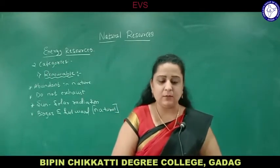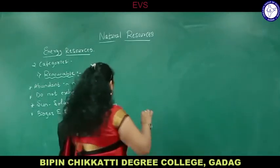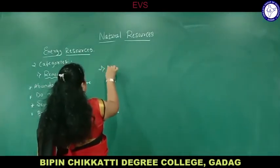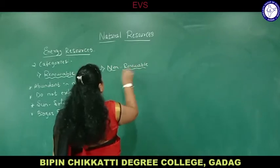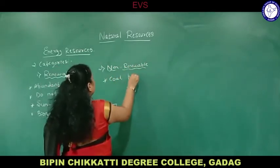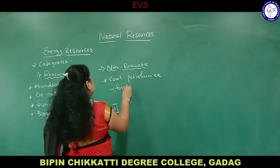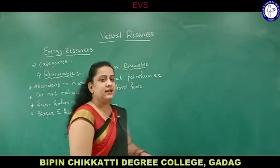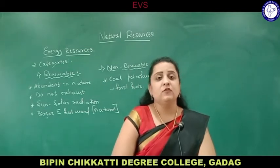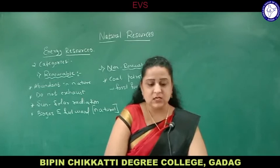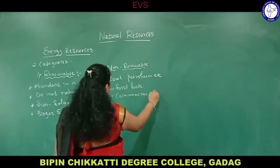Next, coming to non-renewable — that is coal, oil, natural gas, or petroleum products. They are non-renewable resources, also called fossil fuels. As the name indicates, non-renewable means they cannot be renewed in the atmosphere — they get exhausted soon. Coal, petroleum, etc., together are called fossil fuels. They are used as commercial form of energy — for example, petroleum and diesel for our vehicles and transportation.